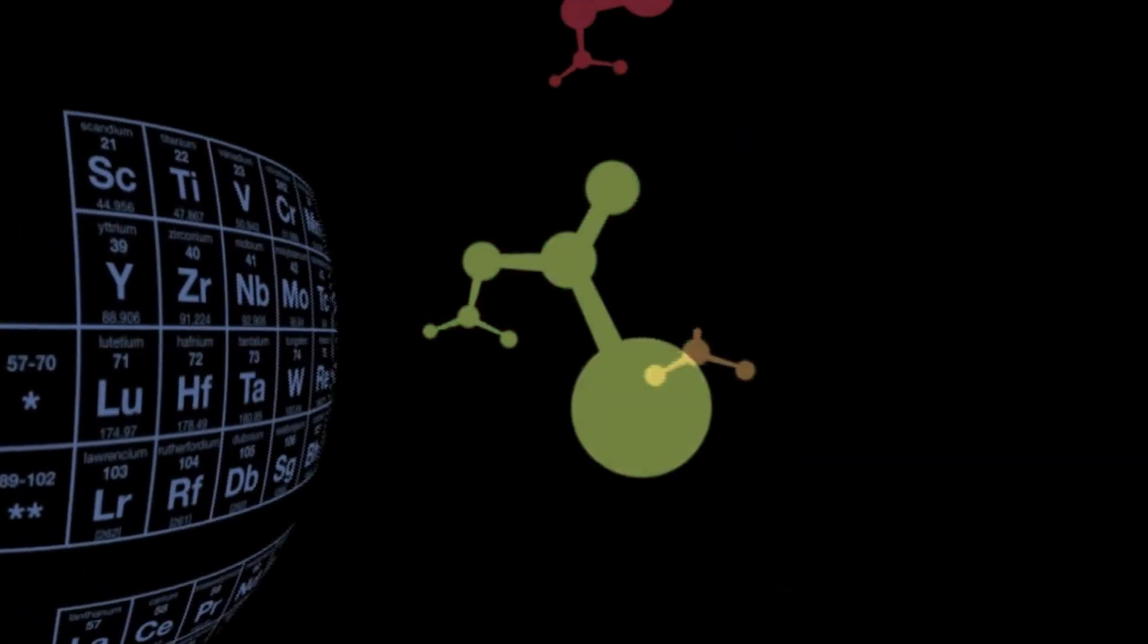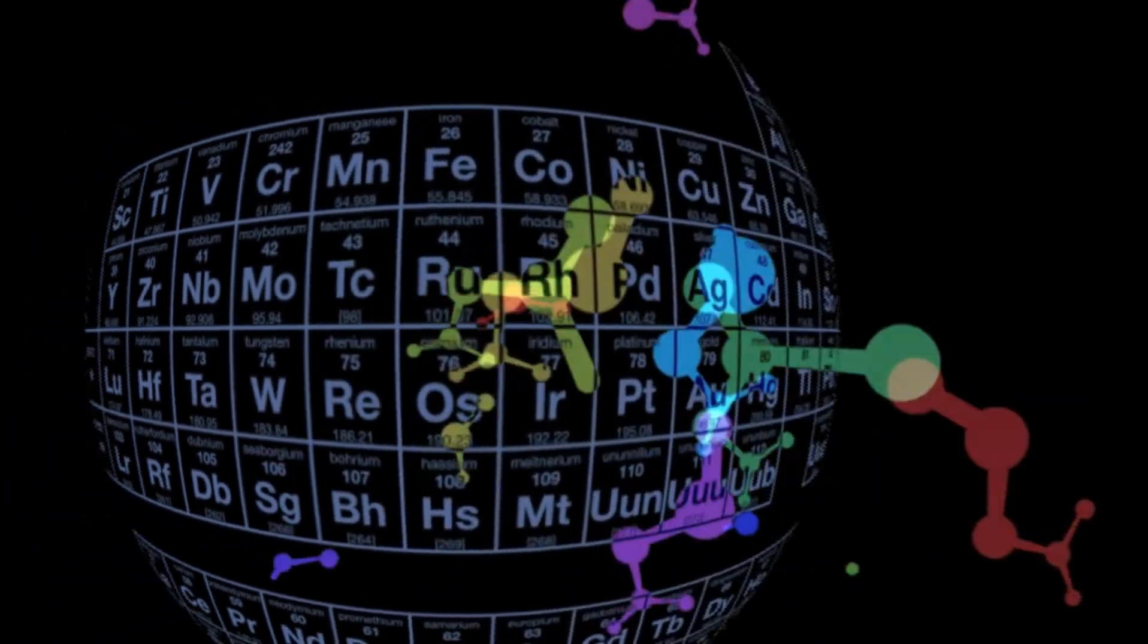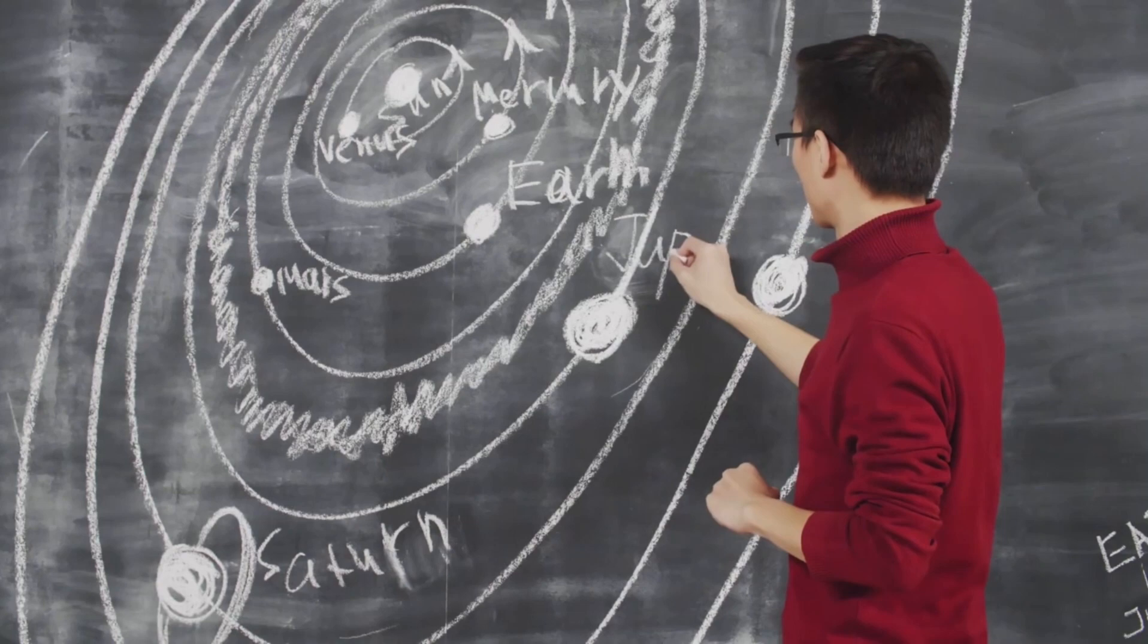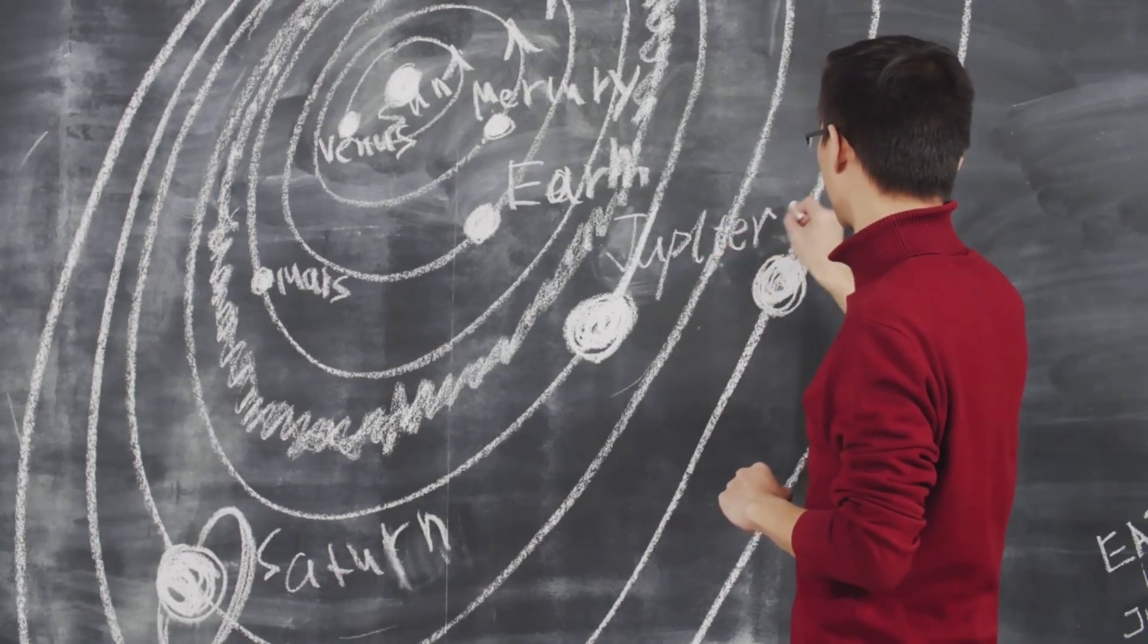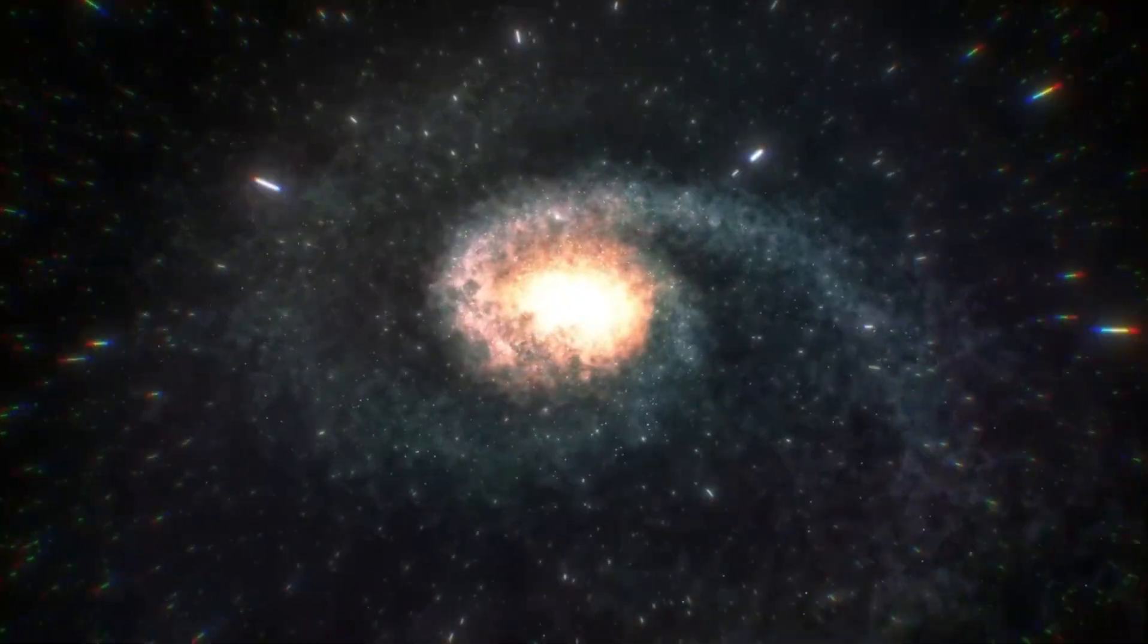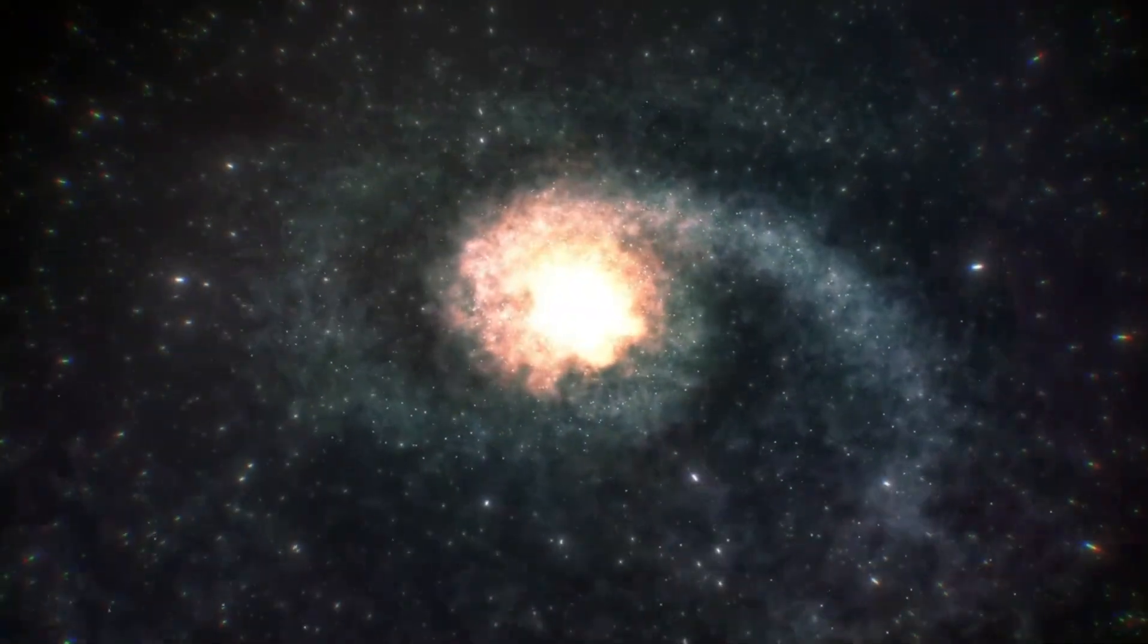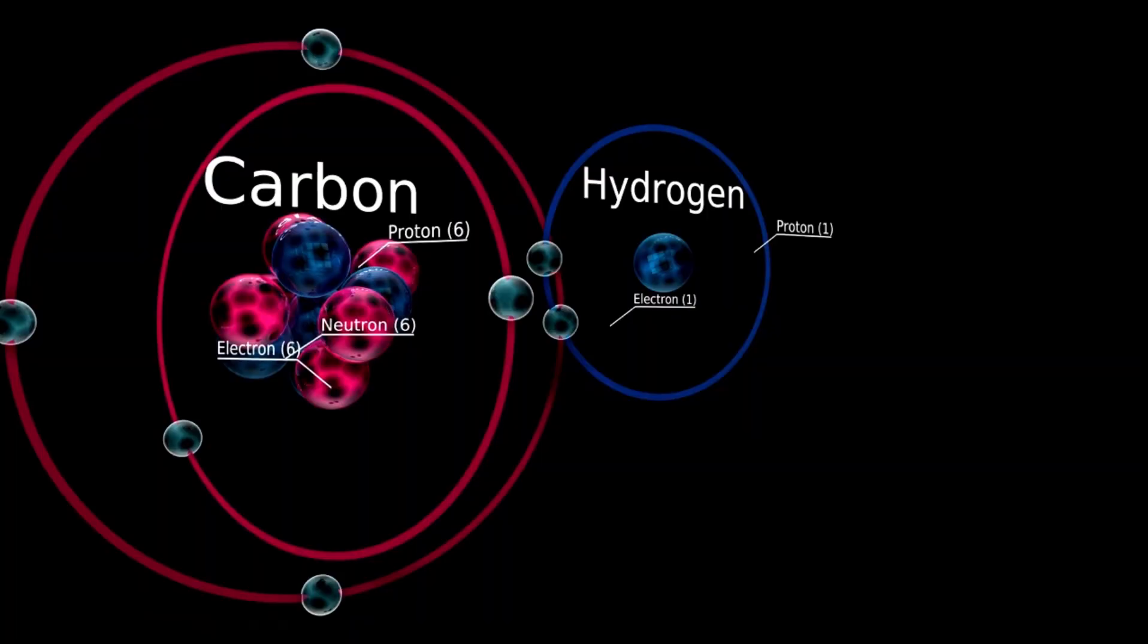Until recently, scientists believed it would take billions of years after the Big Bang for such complex molecules to form. But the light Webb detected began its journey a mere 1.5 billion years after the origin of the universe, meaning these sophisticated chemical structures existed in the early universe far sooner than anticipated. This not only shakes the foundations of our cosmological models, but also opens a new chapter in our understanding of how quickly life's building blocks can emerge.